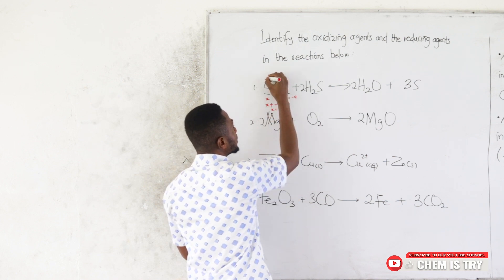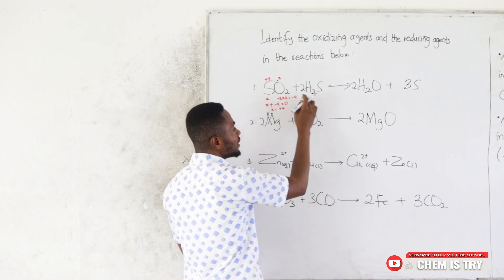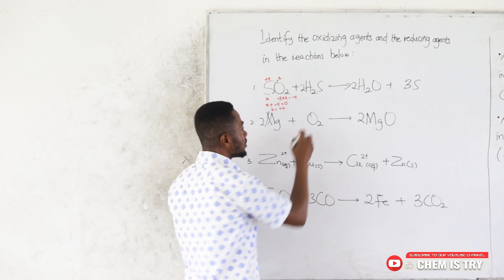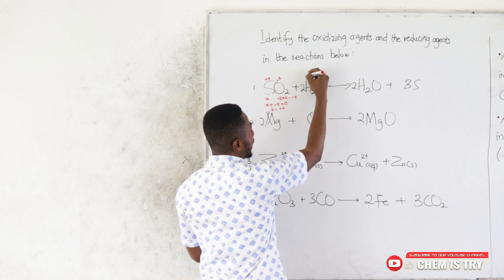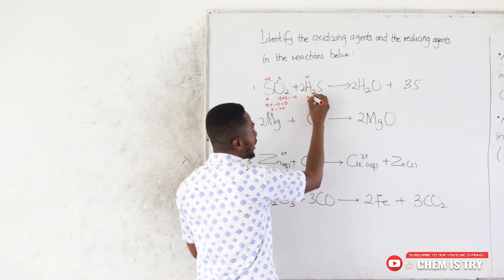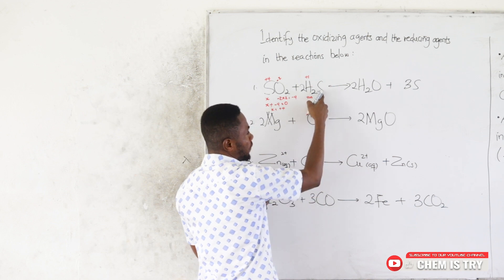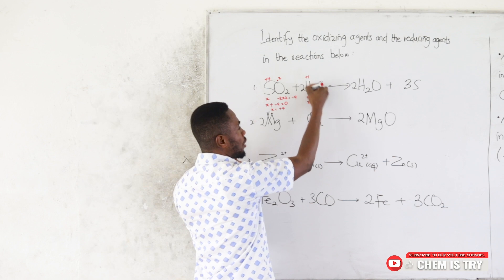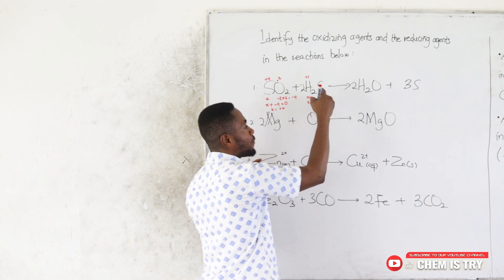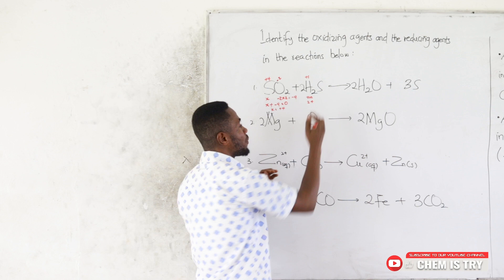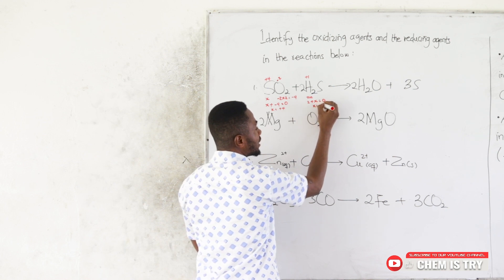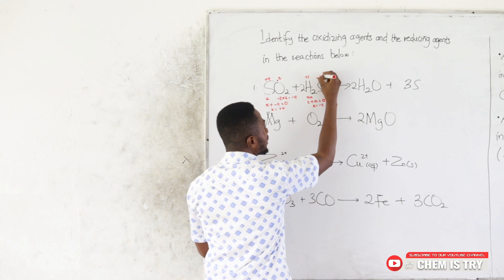In H₂S, hydrogen bonded to a non-metal (sulfur) has an oxidation number of +1. With two hydrogen atoms, that gives +2. Letting sulfur's oxidation number be x: +2 + x = 0, so x = −2. The oxidation number of sulfur in H₂S is −2.